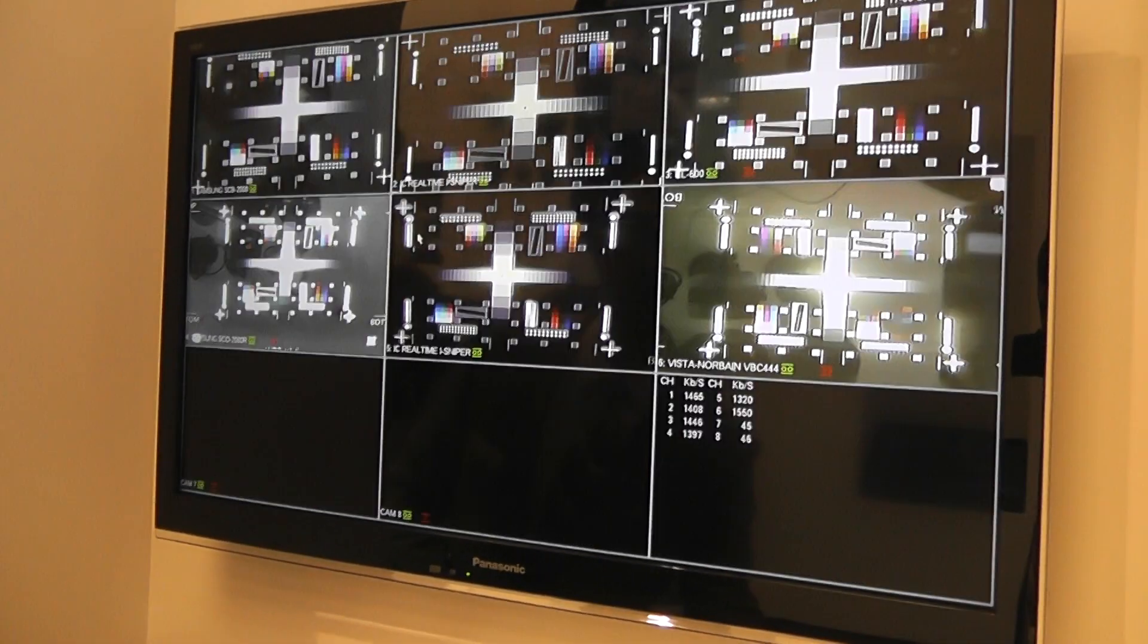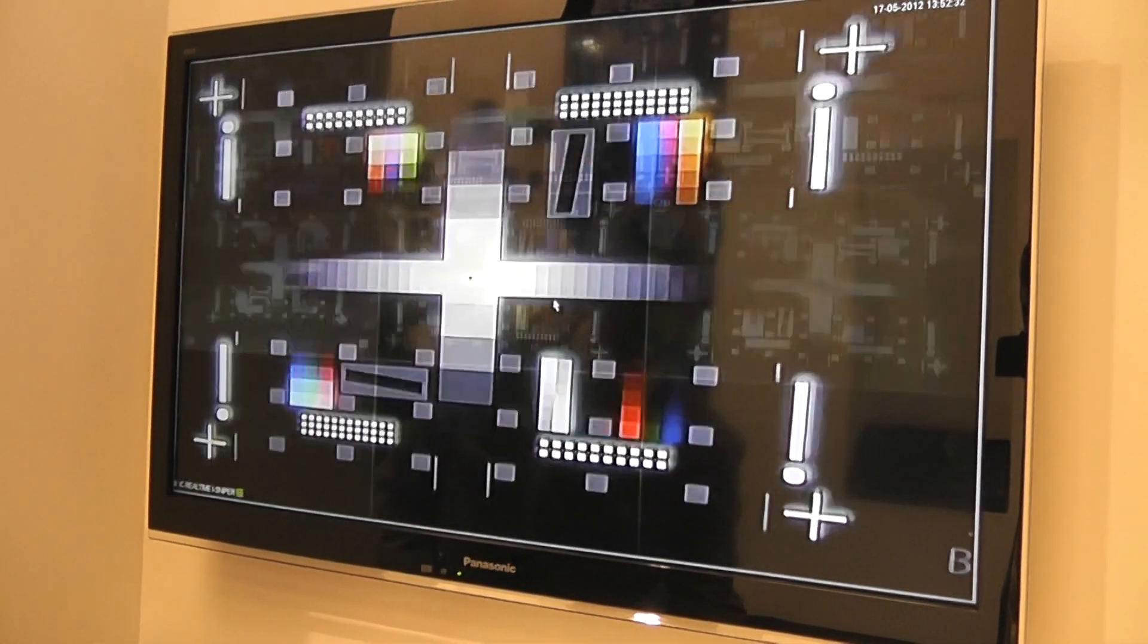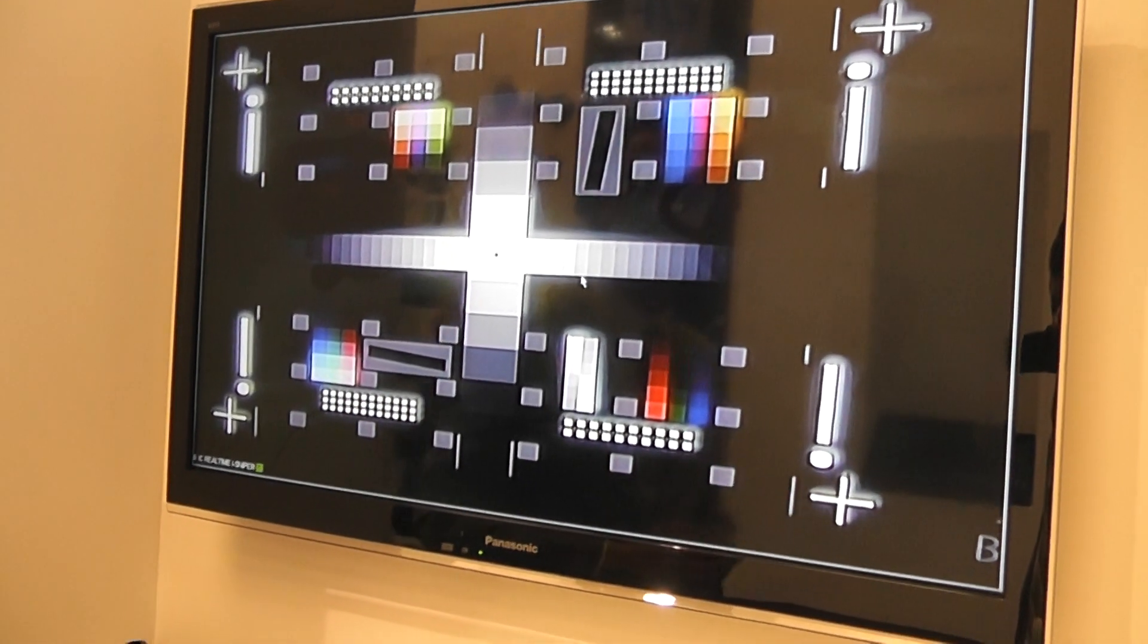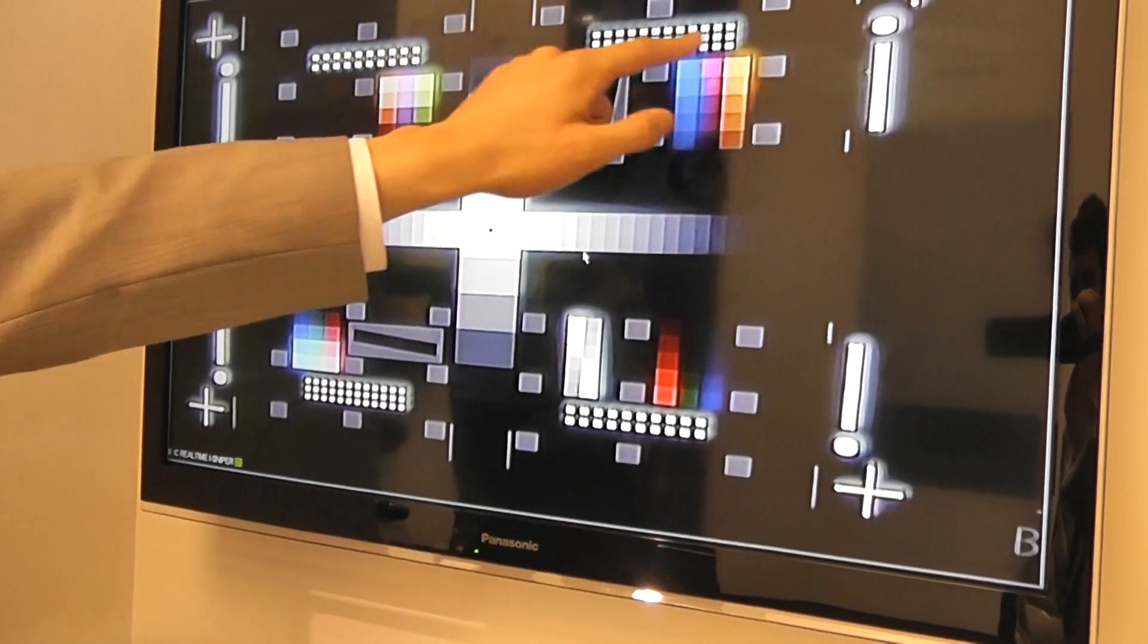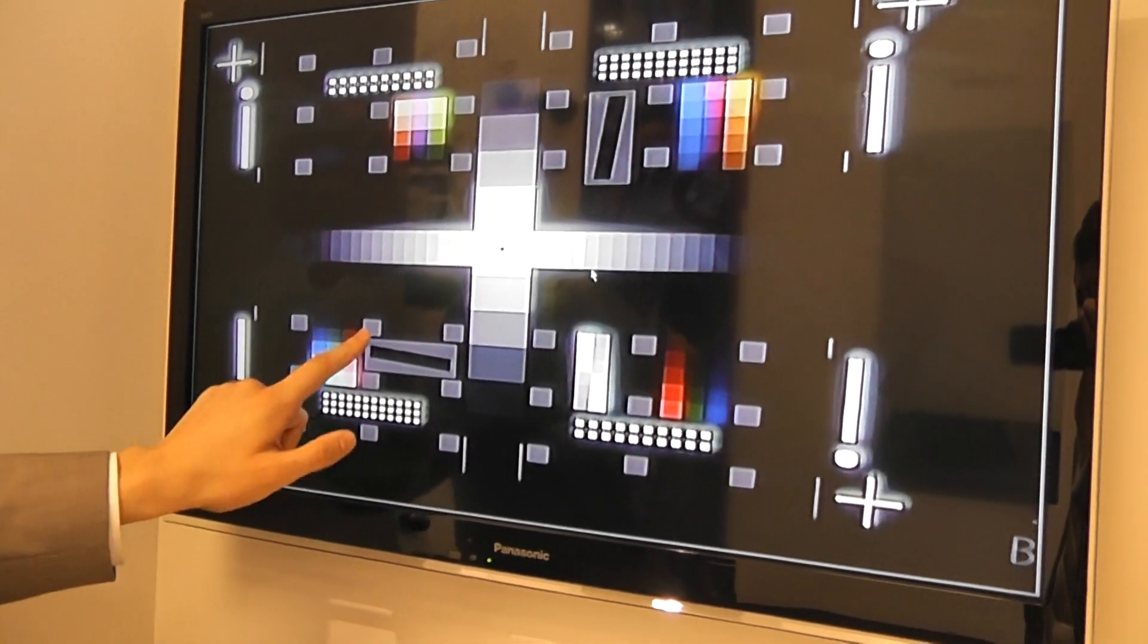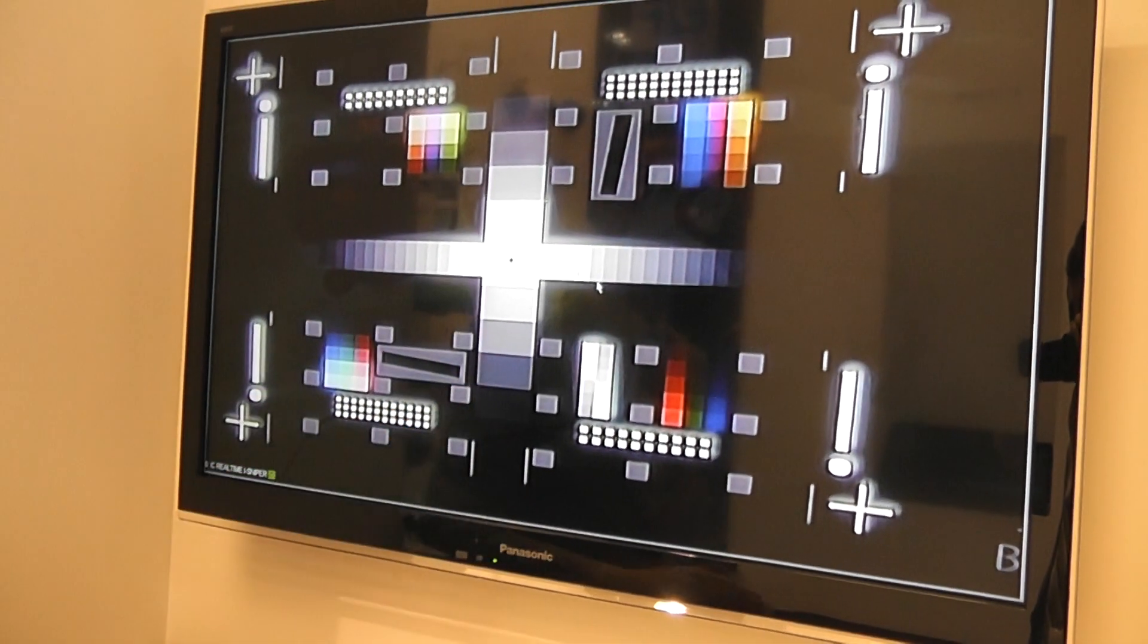I'm going to go into our IR bullet, our EL2000 i-Sniper. Dramatic difference. Absolutely huge difference. Perfect straight lines. Perfect lines up here. Perfect dot reproduction. All your colors. Everything is going on perfect here.